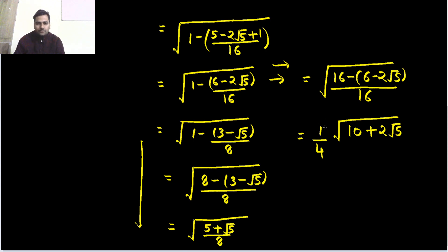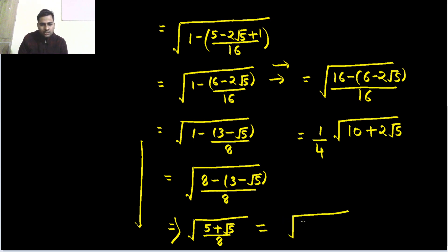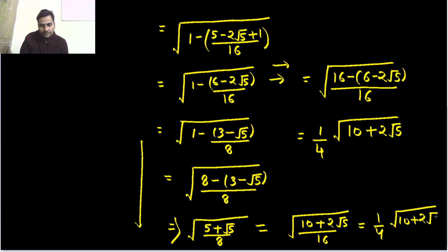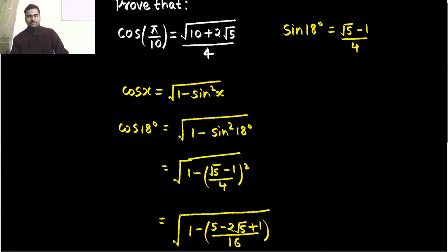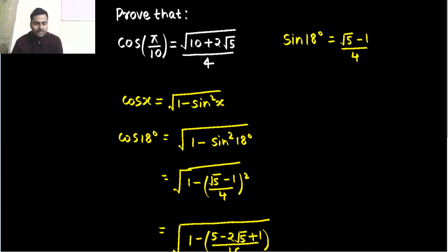So, 1 upon 4 under root 10 plus 2 root 5 divided by 4. Here also you can get the same value — no problem. Multiply numerator and denominator by 2, so you will get under root 10 plus 2 root 5 divided by 16, and 16 comes out as 1 by 4, giving under root 10 plus 2 root 5. So finally, we have derived the result which is under root 10 plus 2 root 5 divided by 4. I will not tell you to remember this — you can easily derive it in a couple of minutes. But the sin 18 value needs to be remembered so that you don't waste time deriving it when you need to use it directly.